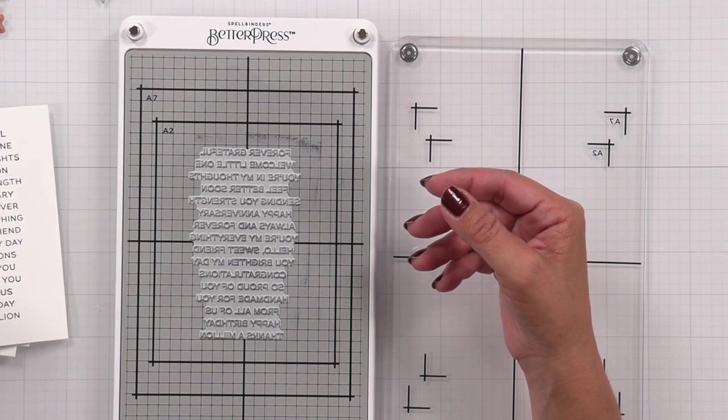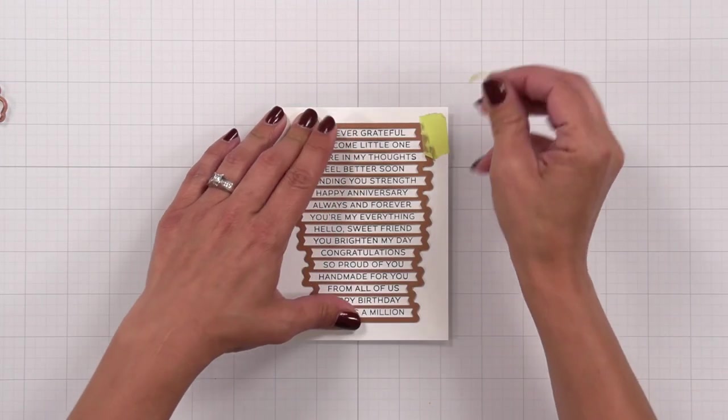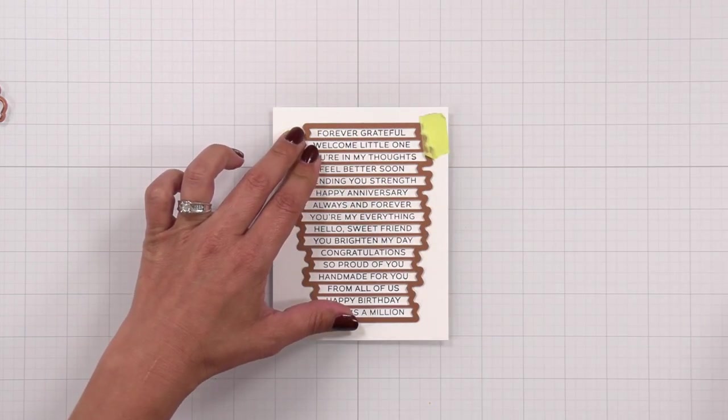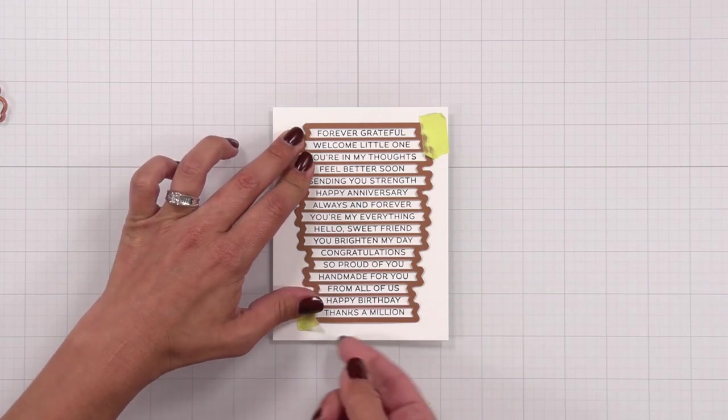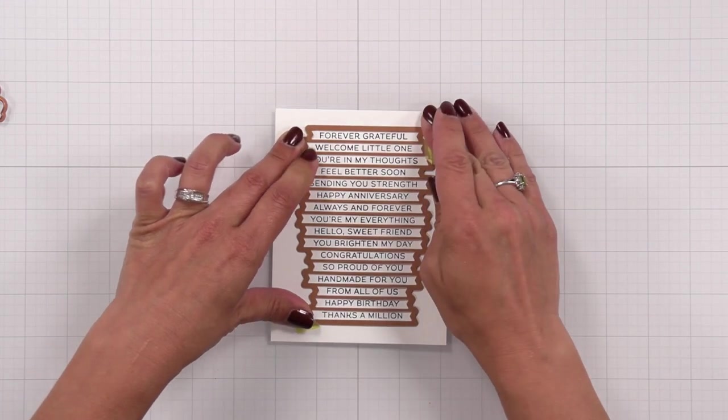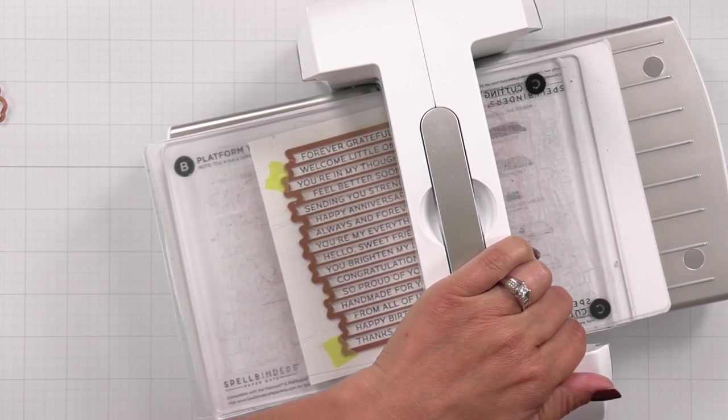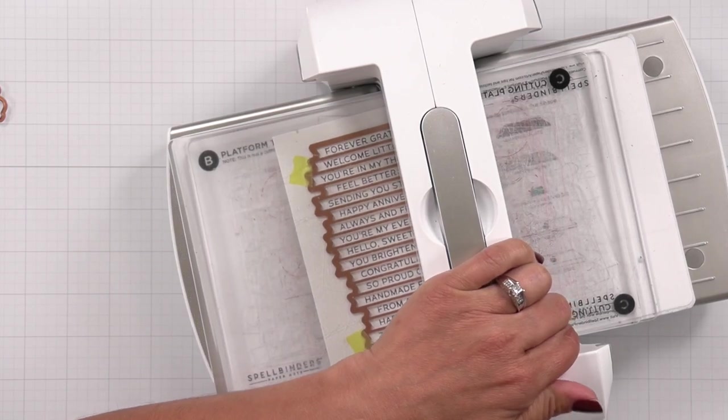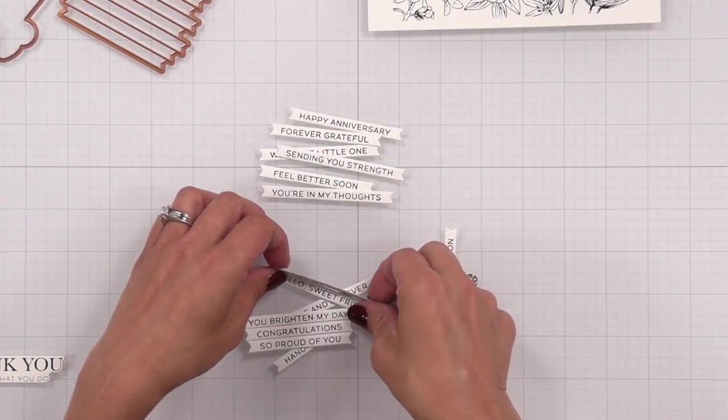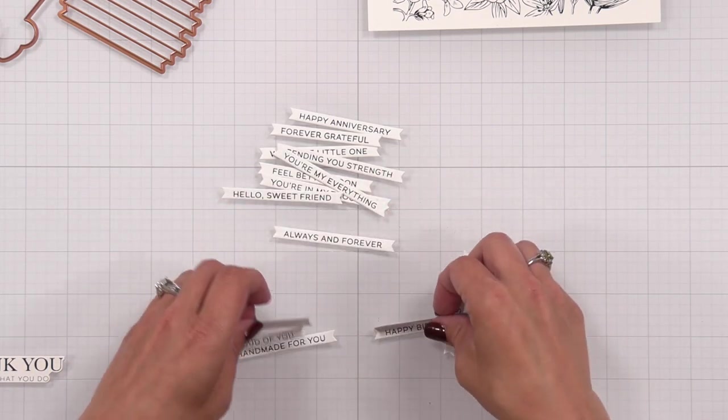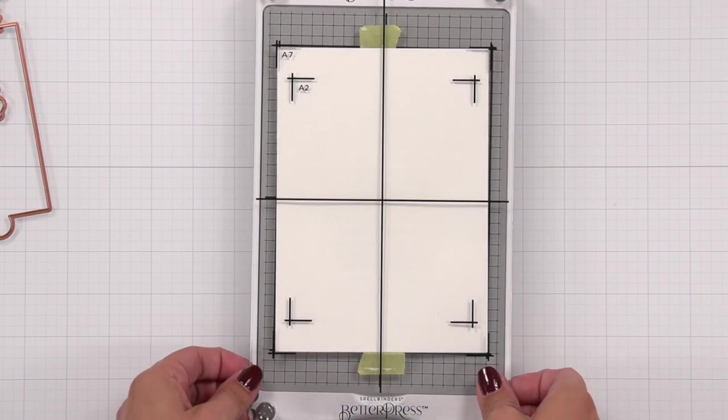Since I had my sentiments out, I went ahead and did it in black as well, so I have options. And then I'm taking the coordinating die, lining it up over the sentiments, and holding that down with the Best Ever Craft Tape. And this is going to die cut all of these sentiments at once. So I did this for both the set that I did in the black ink and the set that I did in the blue. So that way I can kind of play back and forth with some different ideas. And then if you don't care for the flags on the end, you can always use your scissors or paper trimmer to trim those off.